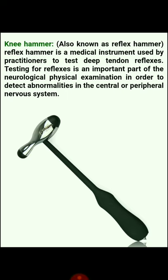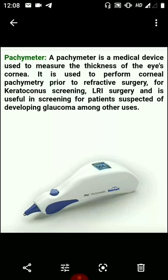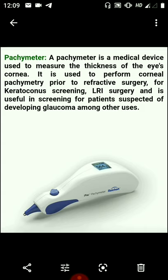You will study about the reflex hammer in neurology. Next instrument is the pachymeter, which you will study in ophthalmology. A pachymeter is a medical device used to measure the thickness of the eye's cornea. It is used to perform corneal pachymetry prior to refractive surgery, for keratoconus screening, LRI surgery, and is useful in screening patients suspected of developing glaucoma, among other uses.